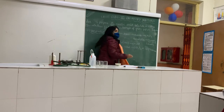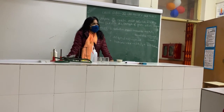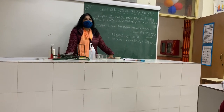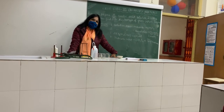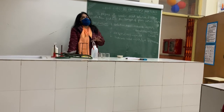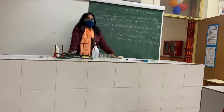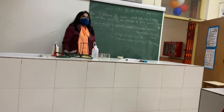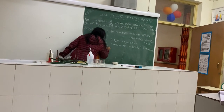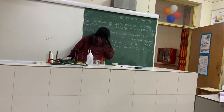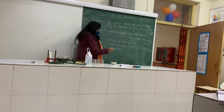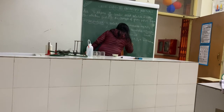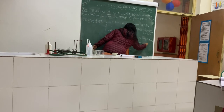Why does KMnO₄ act as a self-indicator? Because if any one solution in a redox titration is colored, that colored solution itself acts as an indicator — no external indicator is needed. The purpose of the indicator is to check the end point by observing the end point color. Here KMnO₄ itself gives the light pink color. So KMnO₄ acts as a self-indicator. Fifth point: end point — colorless to light pink.